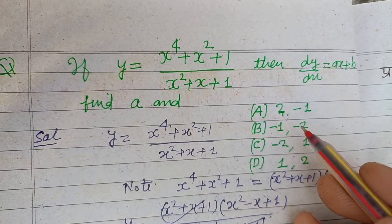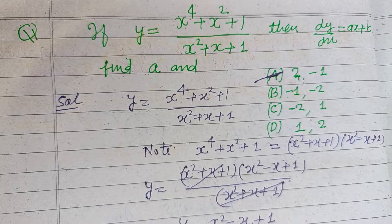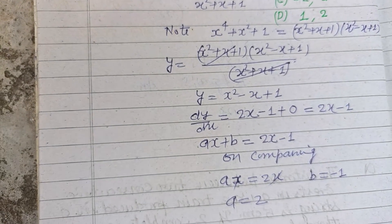So a equals 2, b equals minus 1 is the answer, which is found in option A. Therefore option A is correct. I hope you got it. Please like the video, subscribe the channel. Thanks.